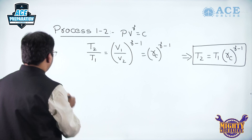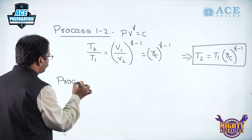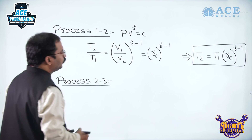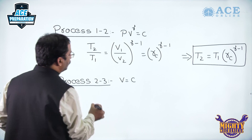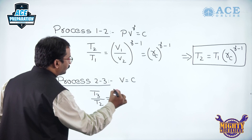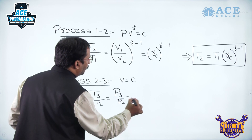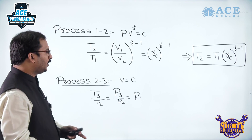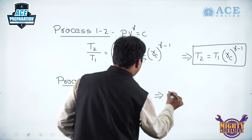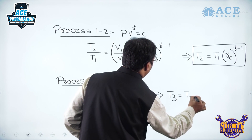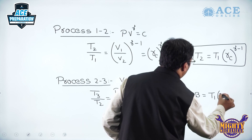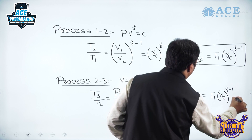For process 2 to 3 (constant volume), temperature is directly proportional to pressure, so T3/T2 = P3/P2 = β. Therefore T3 = T2 · β = T1 · R_C^(γ−1) · β.